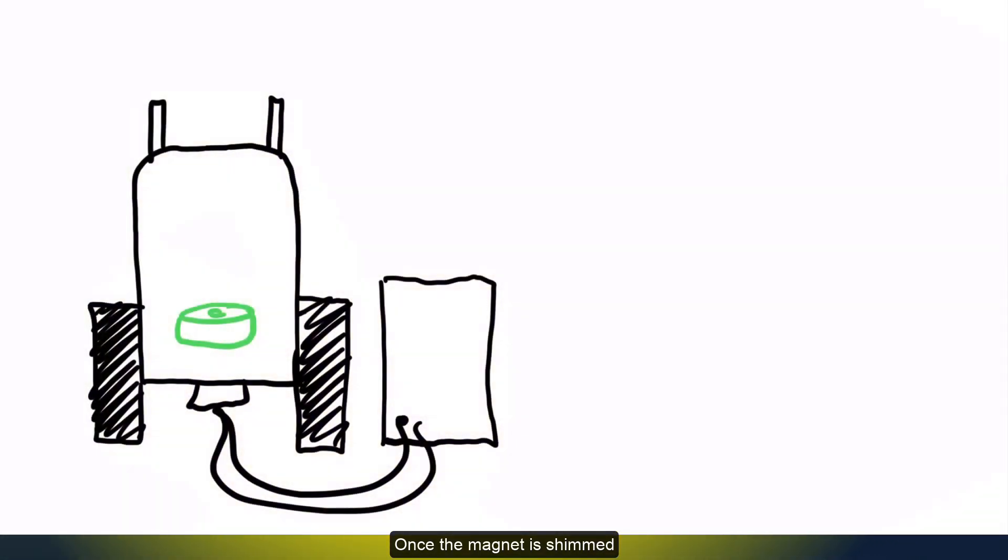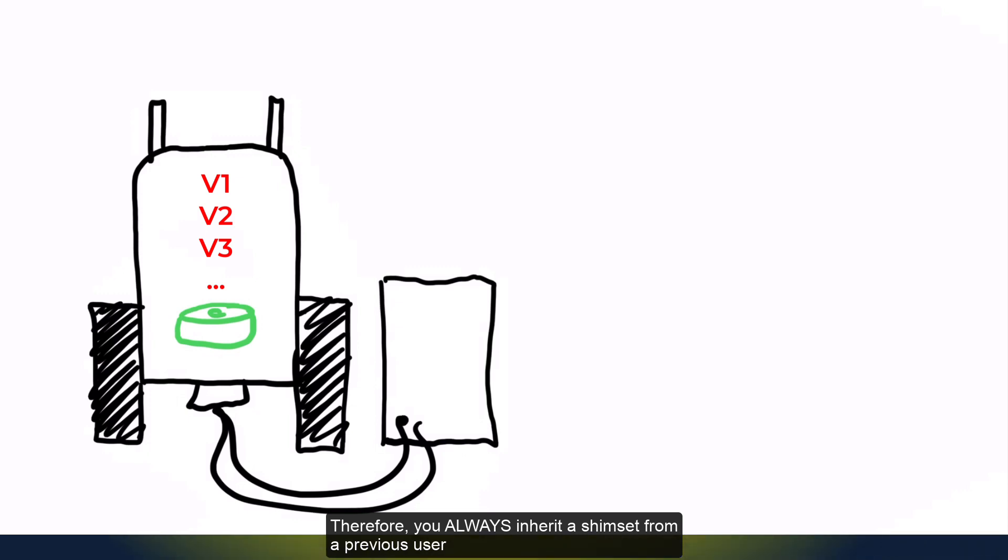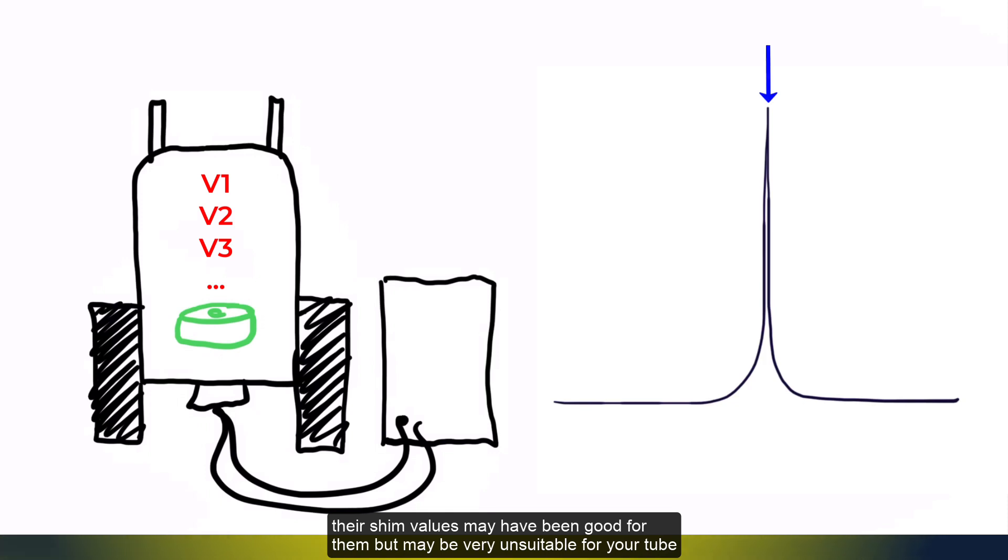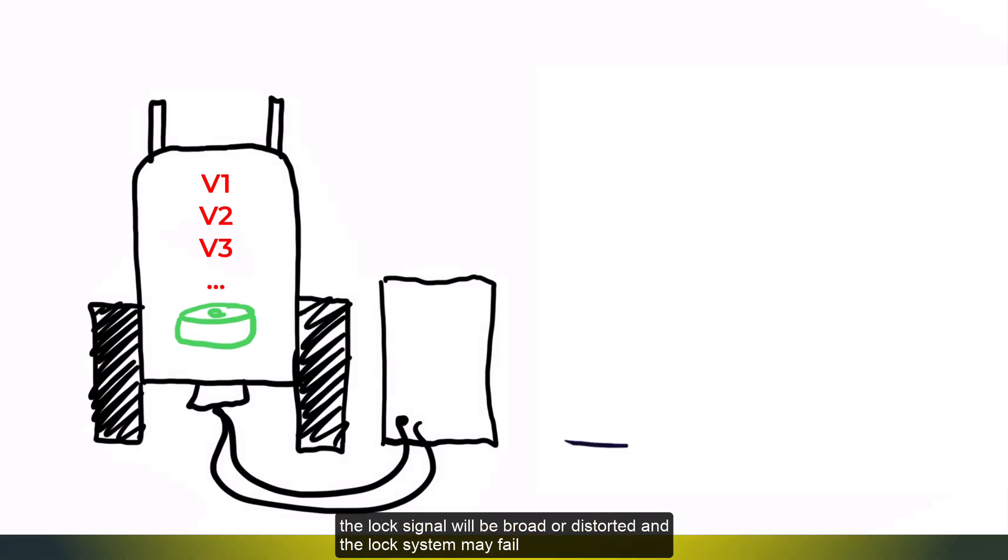Once the magnet is shimmed, the shim values stay until next shimming. Therefore, you always inherit a shimset from a previous user. However, if their sample was very different than yours, their shim values may have been good for them, but may be very unsuitable for your tube. If a shimset doesn't match your tube, the lock signal will be broad or distorted, and the lock system may fail.